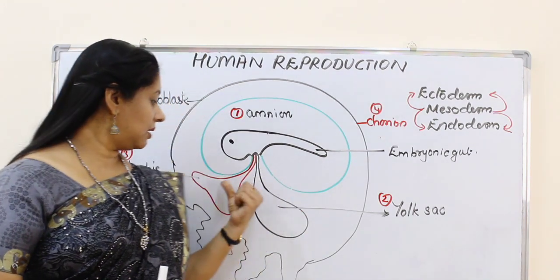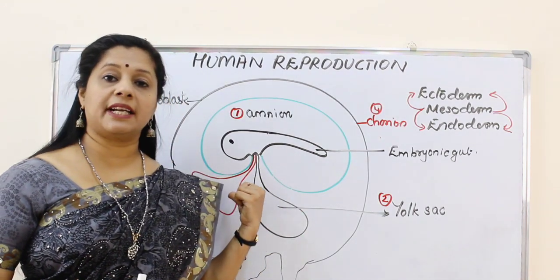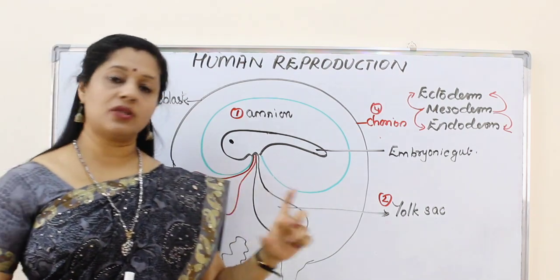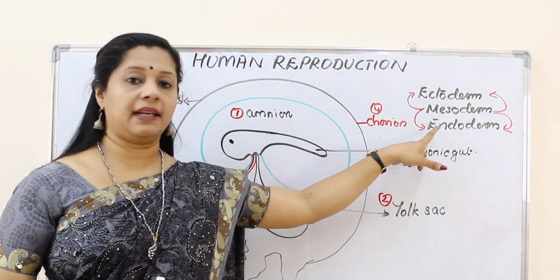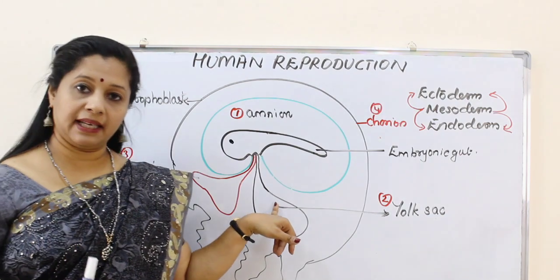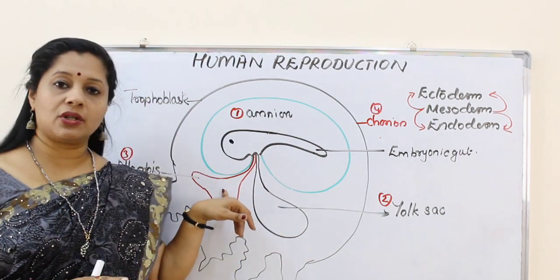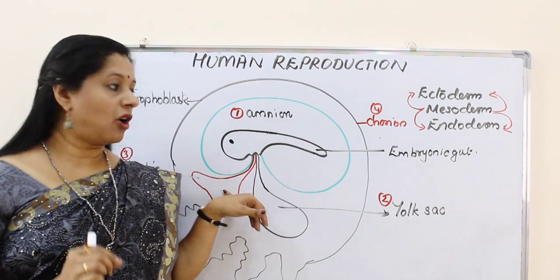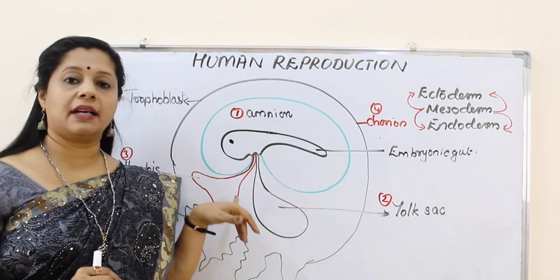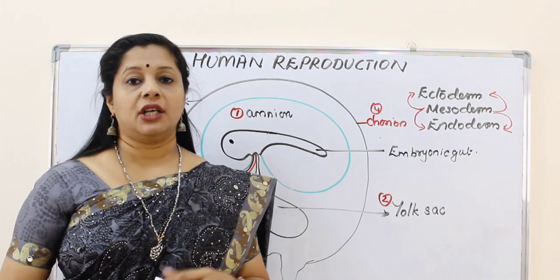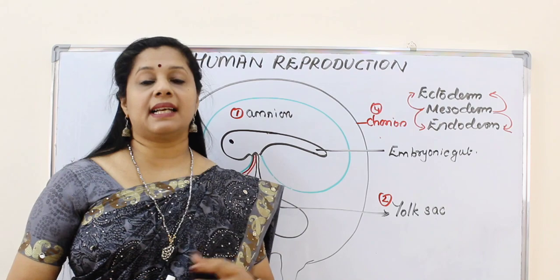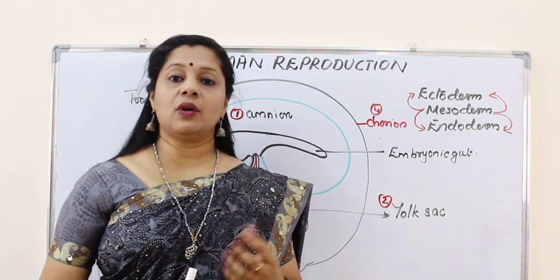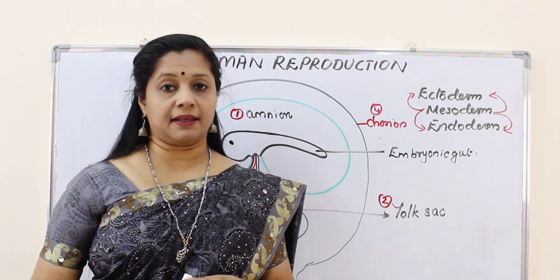The next is a sausage-like pouch called allantois. Allantois is also formed by mesoderm and endoderm — same as the yolk sac. Both are starting from the embryonic gut, which is another common thing to remember. Allantois acts as the urinary bladder of the developing embryo and also supplies blood vessels to the placenta.